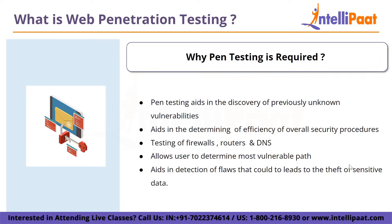A pen test typically simulates real-time systems and lets the user determine whether the system can be accessed by an unauthorized user — what damage may be inflicted, which data affected, and so on. As a result, vulnerability scanning is a detective control approach that offers solutions to improve security programs and ensure flaws do not reappear, whereas a pen test is a preventive control method that provides a comprehensive picture of the system's weaknesses.